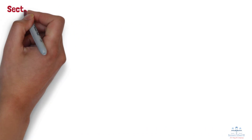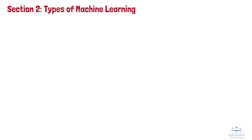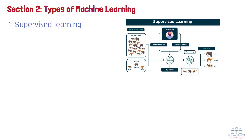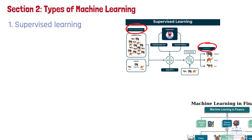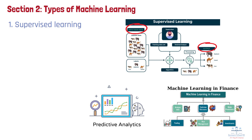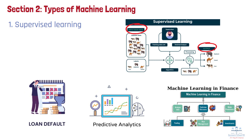Section 2: Types of Machine Learning. There are three main types of machine learning, each with unique applications. Number 1: Supervised Learning. Supervised learning involves training a model on a labeled dataset, where each example is paired with a desired output. The model learns to make predictions or decisions based on this input-output pairing. For instance, in the financial sector, supervised learning algorithms are employed to assess creditworthiness. By analyzing historical data labeled with instances of loan defaults and successful repayments, the model can predict the likelihood of a new applicant defaulting on a loan.